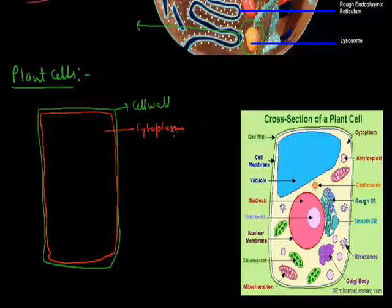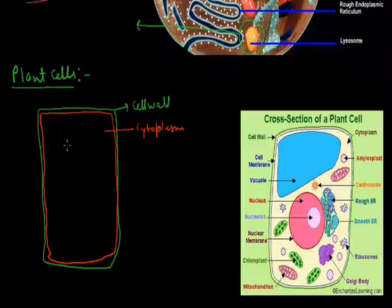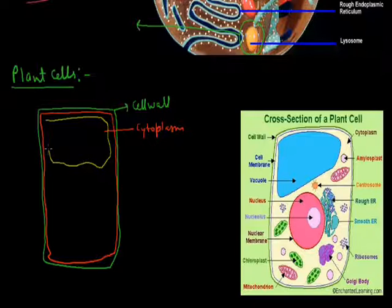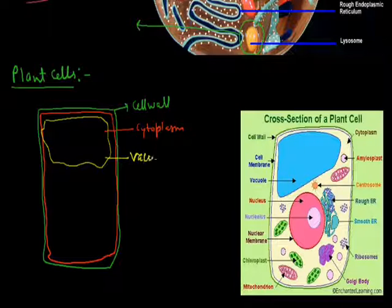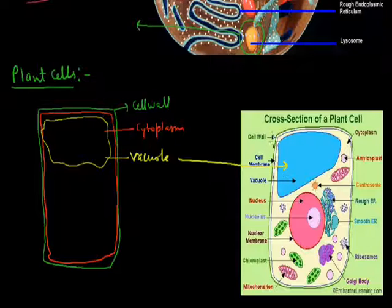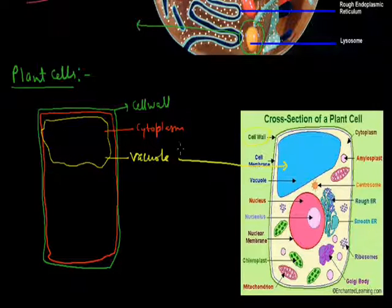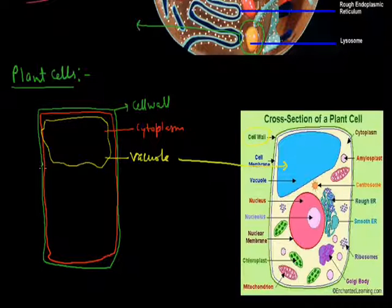Another important feature of the plant cell is that it has a very large vacuole. This large vacuole is present inside the plant cell. The outermost layer is the cell wall, and the second membrane is the cell membrane.